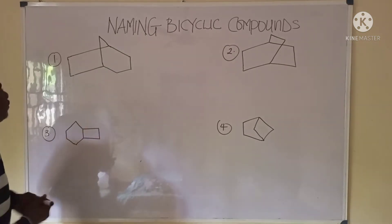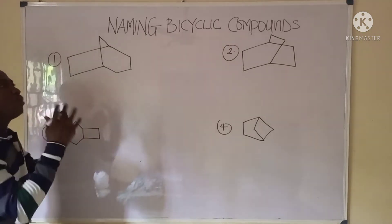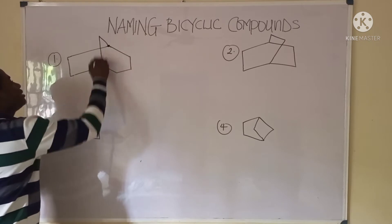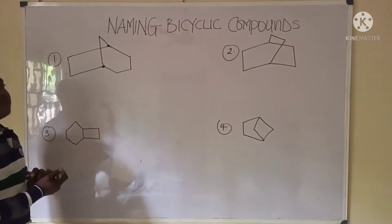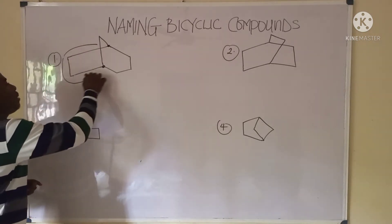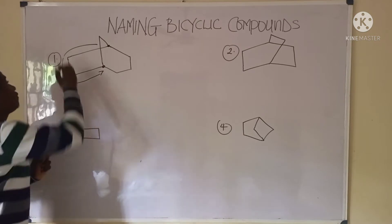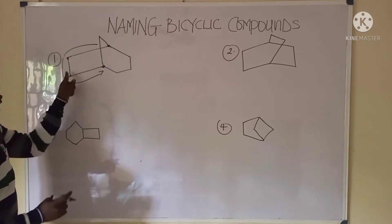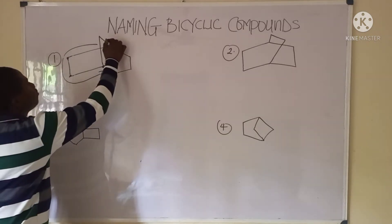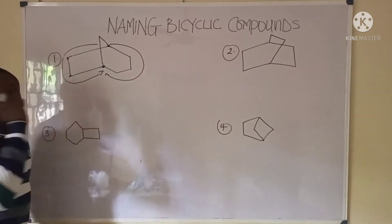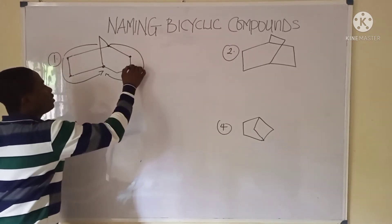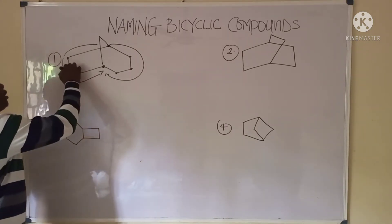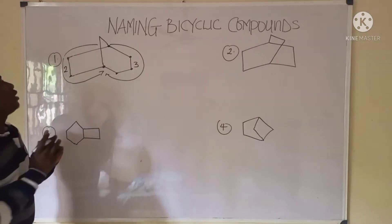Let's start with the first example and locate the bridgehead carbons — the carbons that join the rings together. Moving from one bridgehead carbon to the other from the left, we have two carbons. Moving from the other bridgehead carbon to the right, we have three carbons.